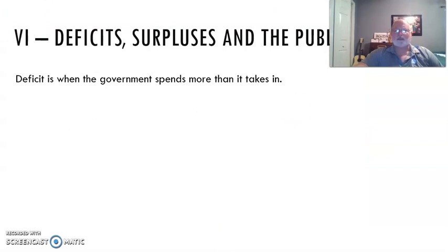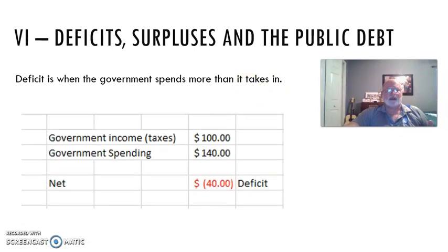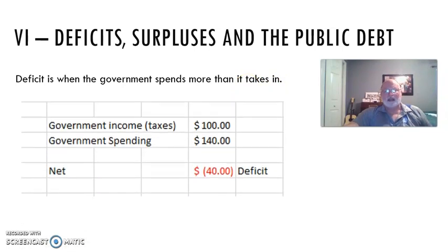Now, next topic, deficit surpluses and the public debt. All right, so write that title down. And the deficit is when the government spends more than it takes in. Now, this is per year. Now, be expecting this on Thursday. I may say, what's the deficit? That's when the government spends more money than it takes in. And here's an example. I want you to copy it down. Government income is $100. What did they spend? $140. And so, remember, government income is taxes. And so there's a $40 negative for the year. That is called a deficit.